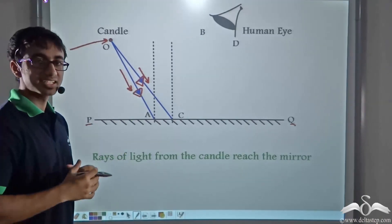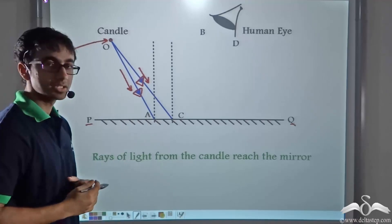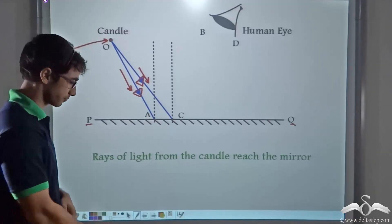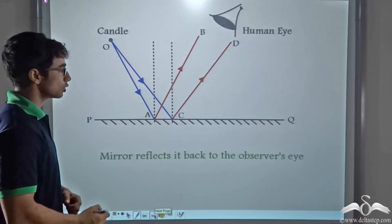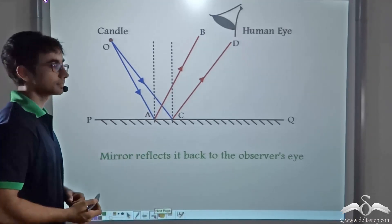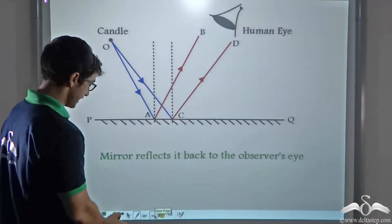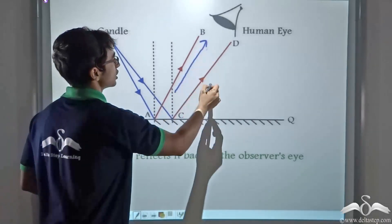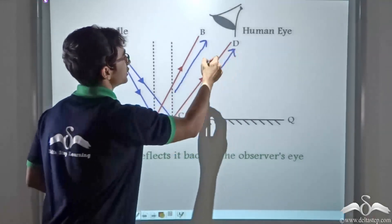So after these incident rays come and hit the mirror, what will happen? They will bounce back. So after these rays bounce back, that is after they are reflected, they reach the observers or in this case the human eye.